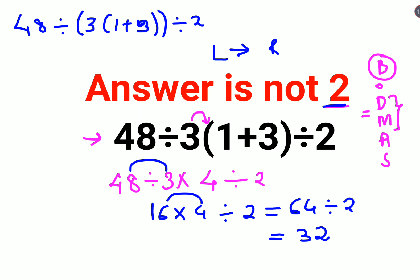That means 48 divided by 3 times 4, which is 12, divided by 2. So 48 divided by 12 is 4, divided by 2, and in that case you will get the answer as 2.